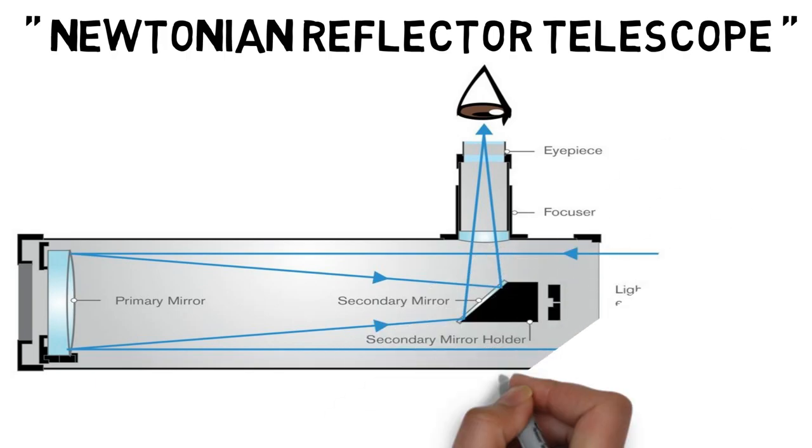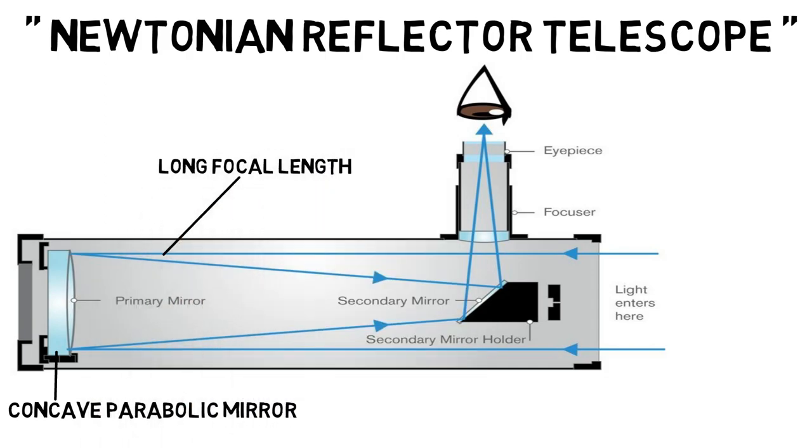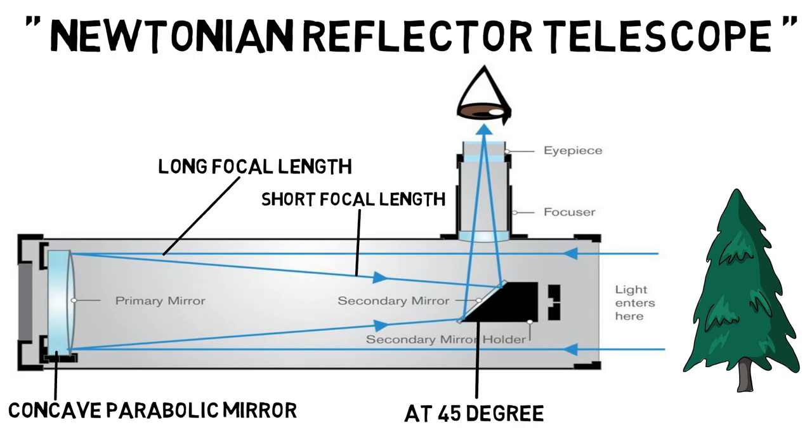Newtonian reflector telescope. In the image, as you can see, the objective of the telescope is a concave parabolic mirror with a long focal length and the eyepiece at 45 degrees with a short focal length. The rays coming from the outside reflected at the primary mirror or objective, and then directed sideways at the small plane mirror to the eyepiece lens.